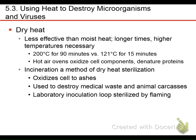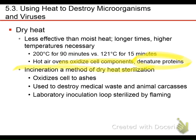Dry heat is less effective than moist heat — it takes longer times and higher temperatures. I have a dry oven in the prep room; to sterilize with it I'd have to take it up to 200 degrees centigrade. Moist heat can do the same thing in 15 minutes at 121 degrees centigrade. Dry heat works by oxidizing the components of cells — basically converting them to CO2 or carbon — and also denatures proteins. Incineration, which is what you did in lab with your inoculation loop, oxidizes the cell all the way to ash.